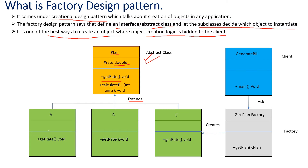We can extend this abstract class to create subclasses — here you can see we are extending the Plan class to create classes A, B, and C. The factory design pattern says: define an interface and let the subclasses decide which object to be instantiated. We also have a factory class which is used to instantiate the classes of different types. The client — GenerateBill — does not know how the factory class is going to instantiate those classes; the creation logic is hidden to the client.